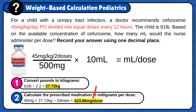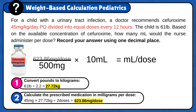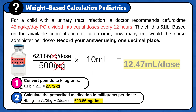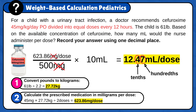Finally, plug the answer in the formula and calculate it: 623.86 milligrams per dose divided by 500 milligrams times 10 milliliters. Milligram cancels out and the answer is 12.47 milliliters per dose. Now, round to one decimal place. Since the hundredth digit is a number between 5 and 9, you will round up the number in the tenth place. The final answer is 12.5 milliliters per dose.